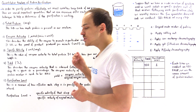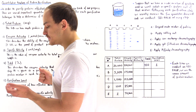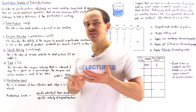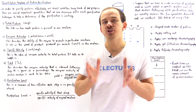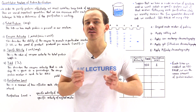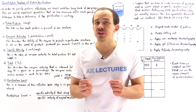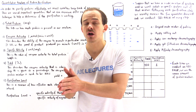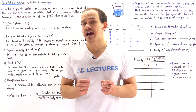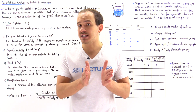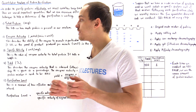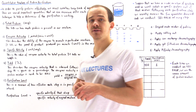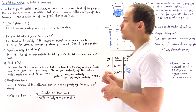Let's begin with the total protein. The total protein is simply the total amount of protein that we begin with in our sample before we carry out that particular purification technique, and this is usually given in milligrams.